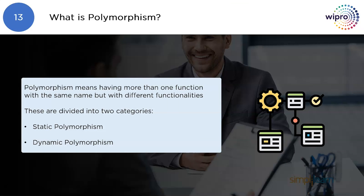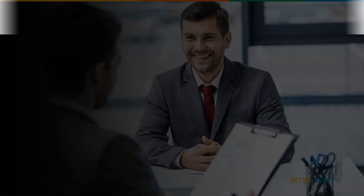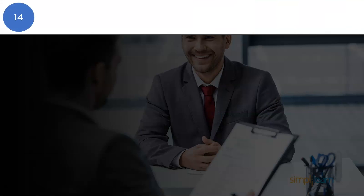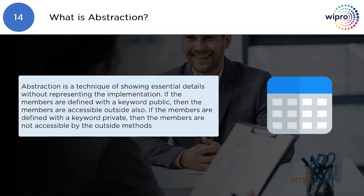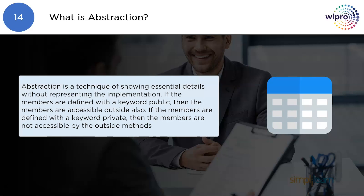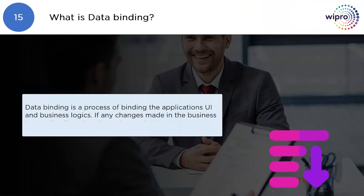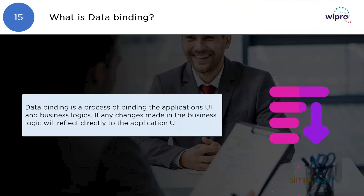What is polymorphism? Polymorphism means having more than one function with the same name but with different functionalities. Polymorphism is divided into two categories: static polymorphism and dynamic polymorphism. What is abstraction? Abstraction is a technique of showing essential details without representing the implementation. If members are defined with the keyword public, they are accessible outside the class; if defined with the keyword private, they are not accessible by outside methods.